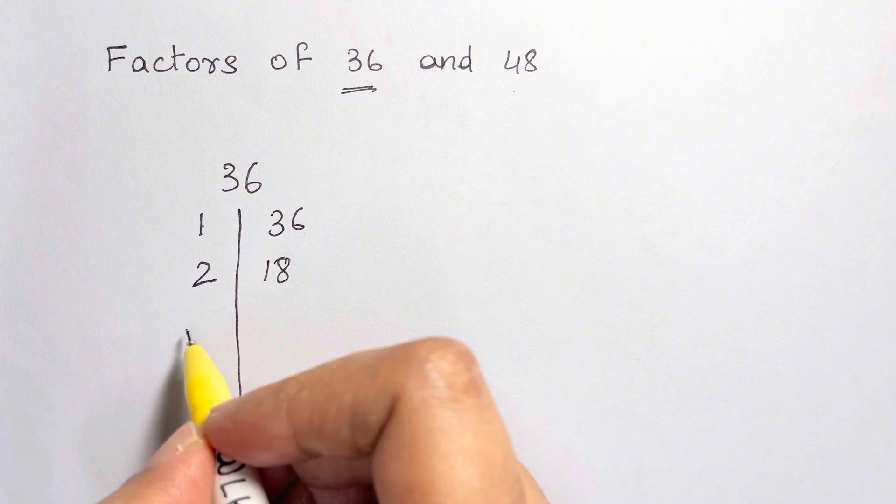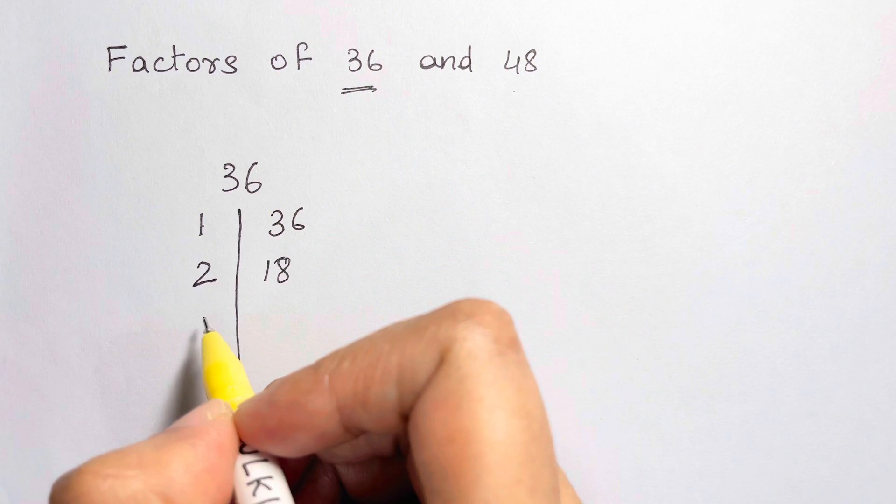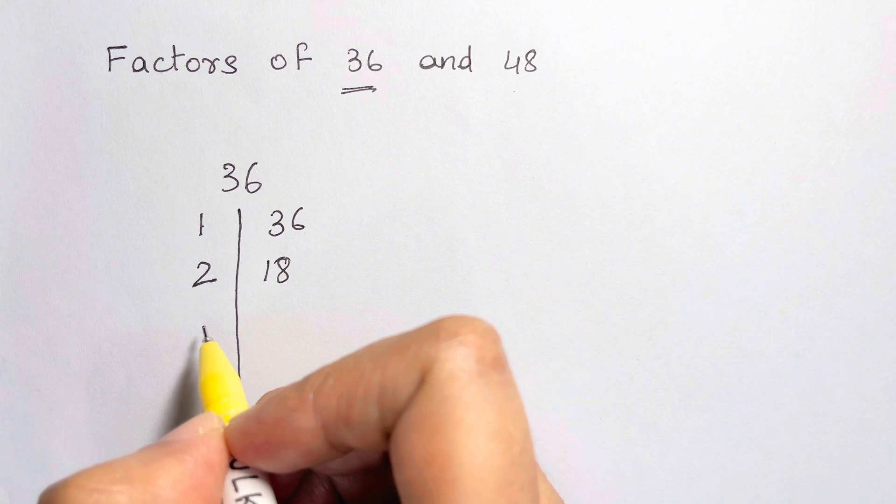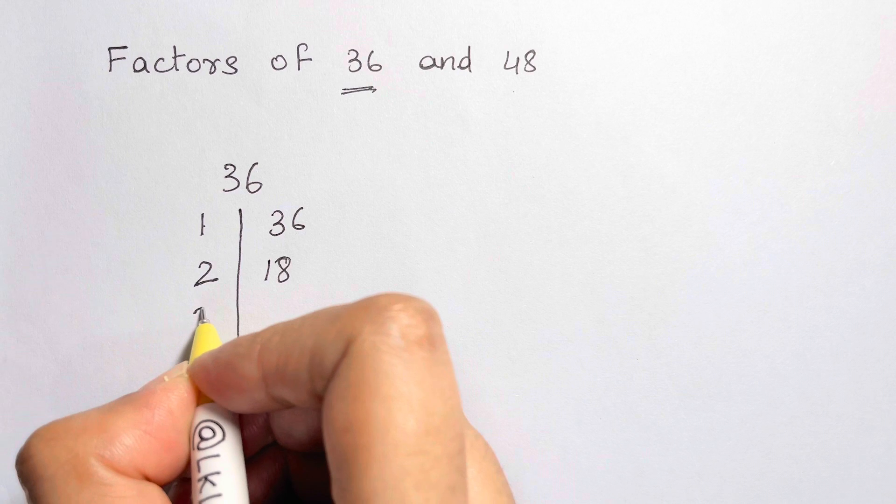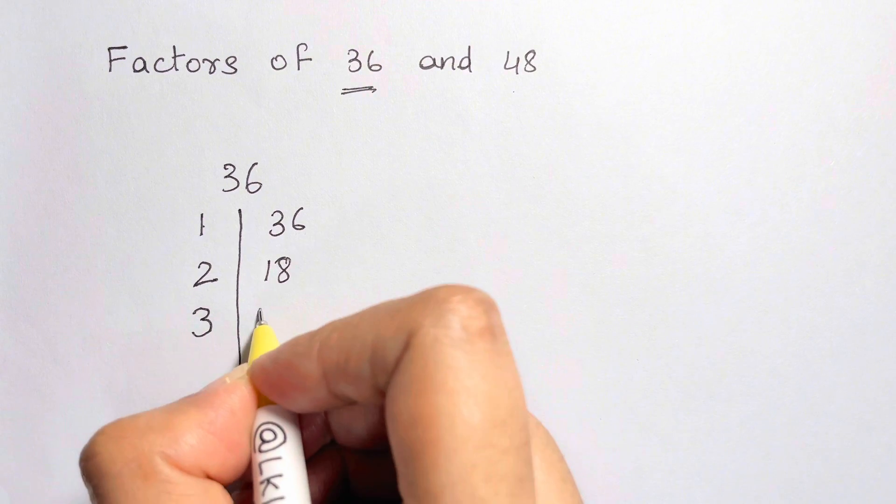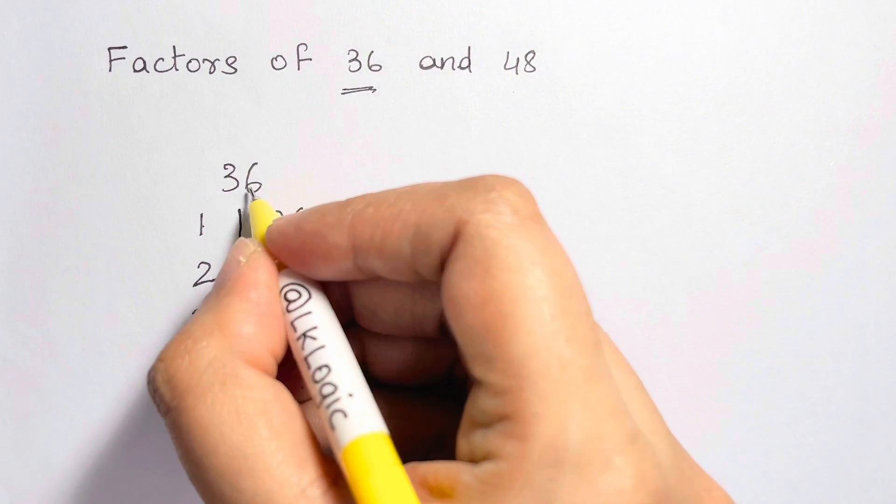Now, the next number after 2 is 3. Is 36 divided by 3 divides it completely? Yes. So, I'm going to take 3. 3 times 12 gives me 36. Yes.